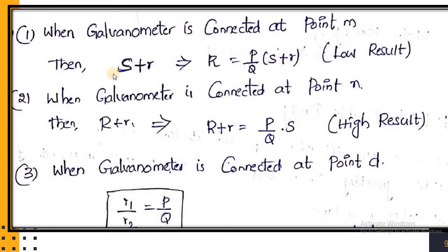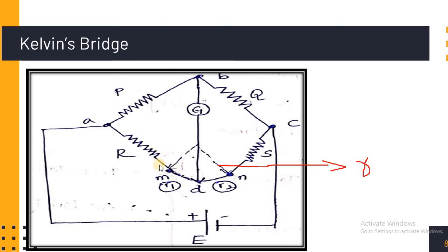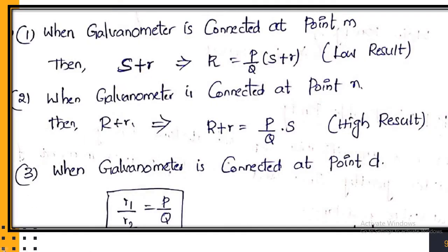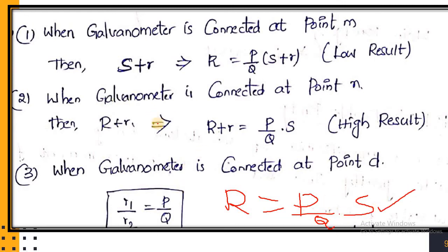When the galvanometer is connected at point N, we have S plus r. Whenever the galvanometer is connected at that point, we have to take the opposite resistor — that is S plus r, where r is the internal resistance of the connecting lead. So we have to consider S plus r. From the DC bridge balance equation, the balanced equation for DC bridges is R = (P/Q) × S. In place of S, we substitute S plus r.